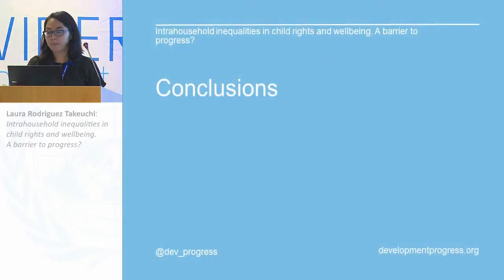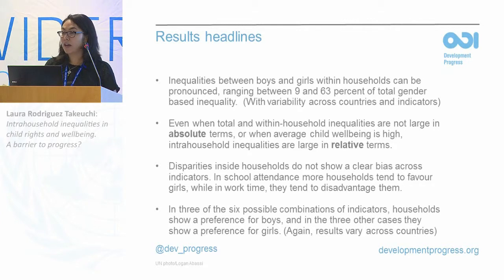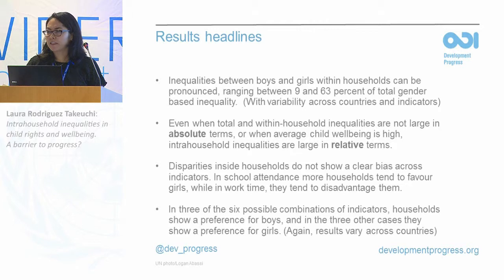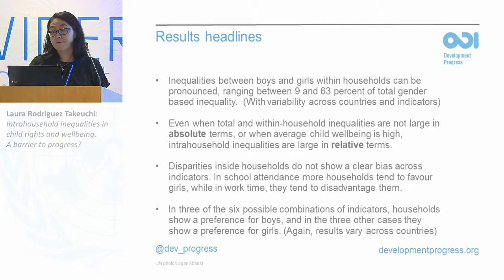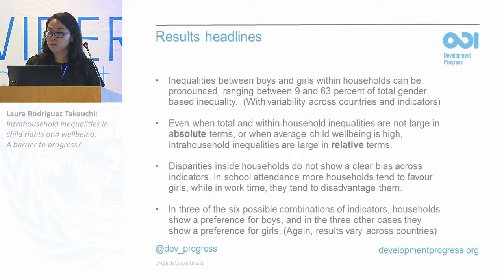The main headline results are: first, although there is wide variation across countries, inequalities between boys and girls within households can be pronounced — in the worst case up to 63% of total inequality, which is a lot. Second, even when in absolute terms they are not very large, they can be large in relative terms, and that is important because it points to where the hardest gaps to address are. Third, there is no clear bias against girls or boys — contrary to popular belief but consistent with other academic evidence. In some cases girls are favored, in some cases boys are favored, and the same applies when looking at pairs of indicators.